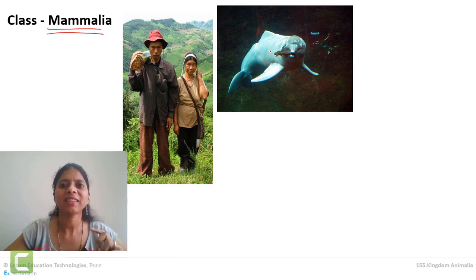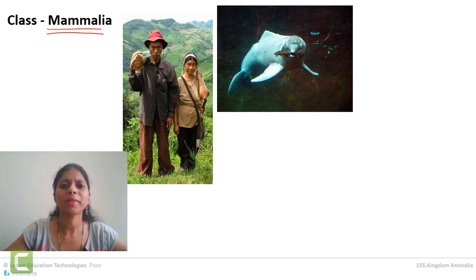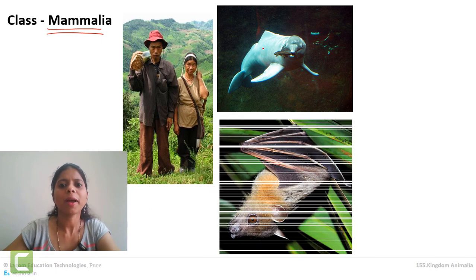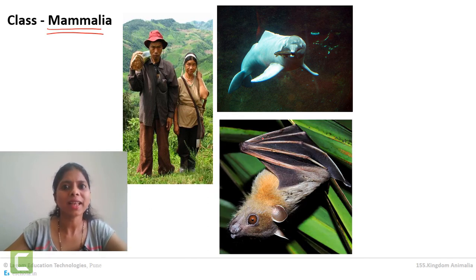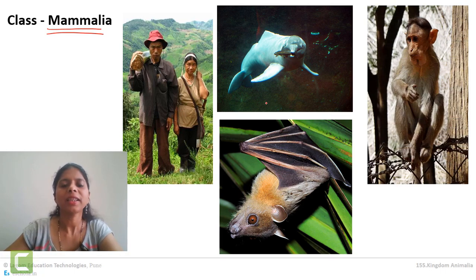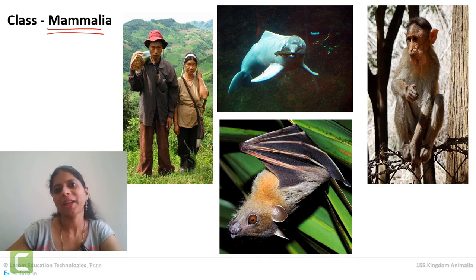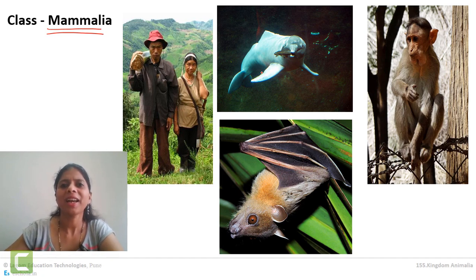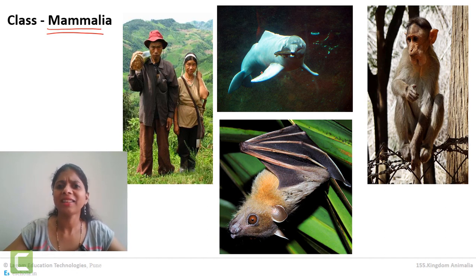Walrus is also a mammal, so there are several aquatic mammals. Another example is the flying mammal — bat is an example of a flying mammal. Then another example is monkey. All these animals fall under Mammalia.